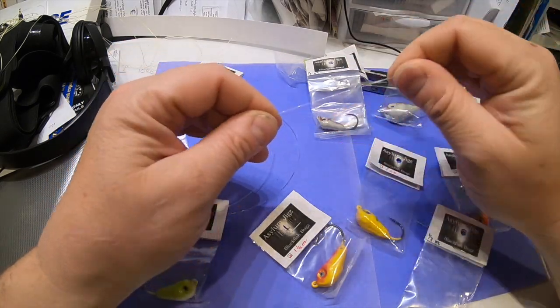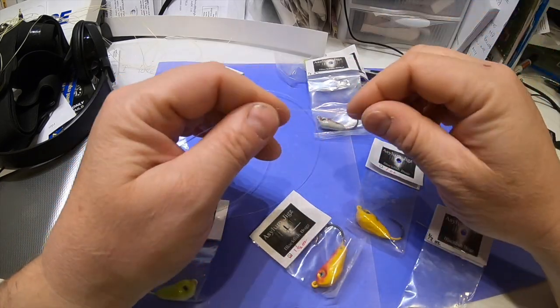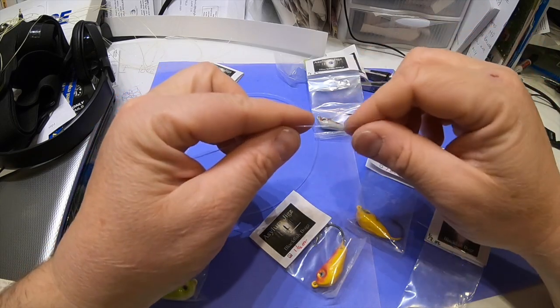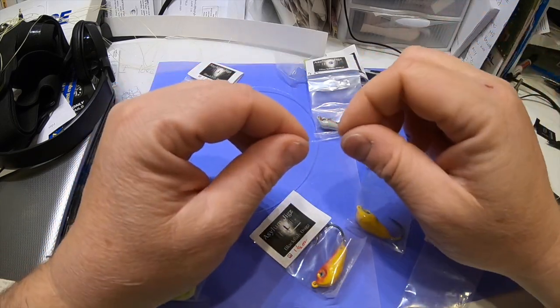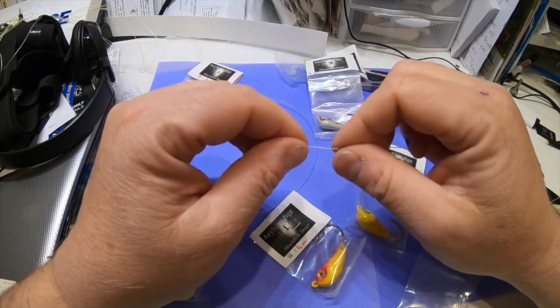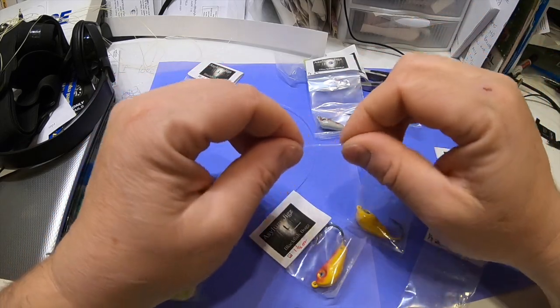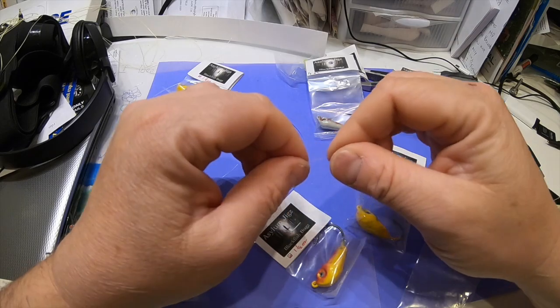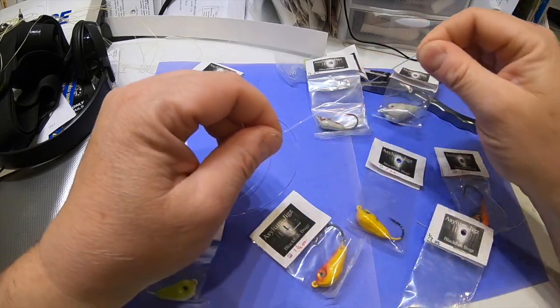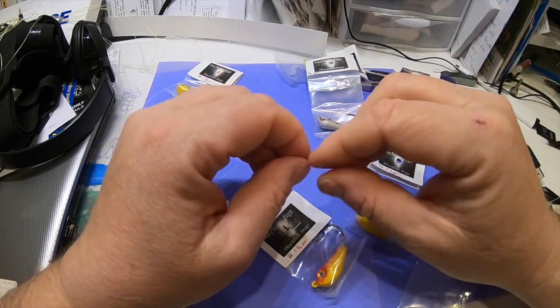If you're fishing that level wind reel and your braid breaks at the level wind, you're out 50 to 100 feet of line, boom, snap right off your reel. So to me that doesn't make great sense. I like the spinning reel.